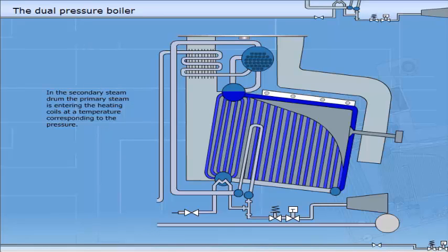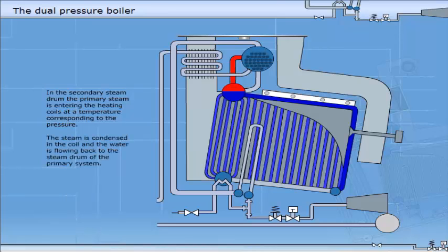In the secondary steam drum, the primary steam is entering the heating coils at a temperature corresponding to the pressure. The steam is condensed in the coil, and the water is flowing back to the steam drum of the primary system.